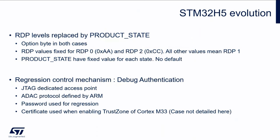So what has changed in H5? We have replaced RDP by product state. This is basically a renaming, but we now have more states. In both cases it's an option byte that you program through Kube Programmer, for instance. For RDP we had three values: AA for RDP level 0, CC for RDP level 2, and any other value meant RDP level 1. For product state, we have a specific value for each state, so there is no default value as before.